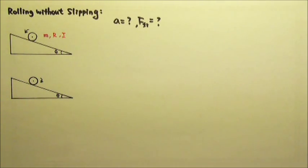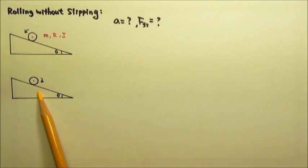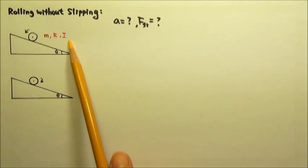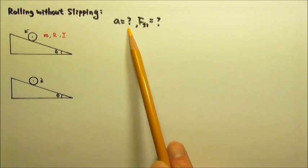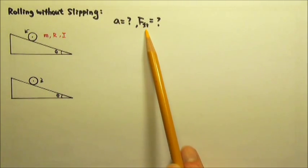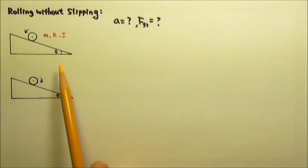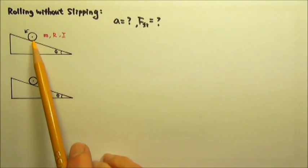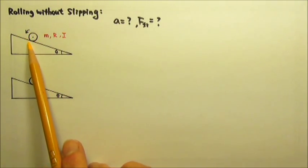We have studied objects that roll without slipping up or down an incline. Let's say the object has a mass m, radius r, and a rotational inertia I. We have to find the object's acceleration and the friction acting on the object. To find these, we have to draw the force diagram and write force equation and torque equation. We have to write both equations because the same object rolling without slipping is doing both translational motion and rotational motion.